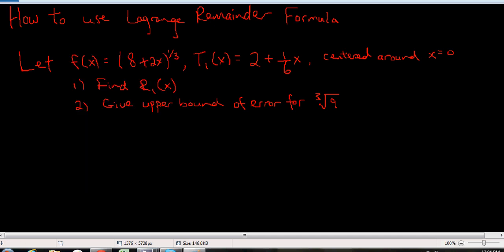Hey, so this is a video to explain how to use Lagrange's remainder formula. You'll be given a question, for example, like this one. So your f(x) is a function that you're given, in this case it's (8+2x)^(1/3). Your first degree Taylor polynomial is 2 + (1/6)x, and this one is centered around x equals 0.